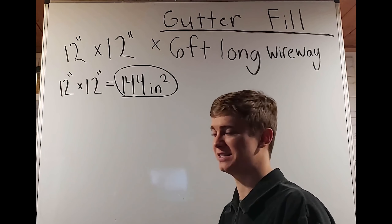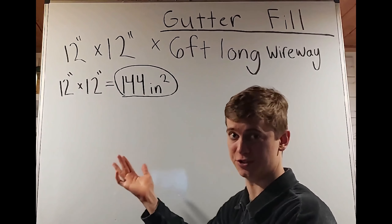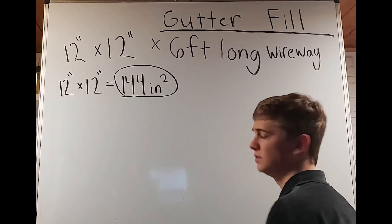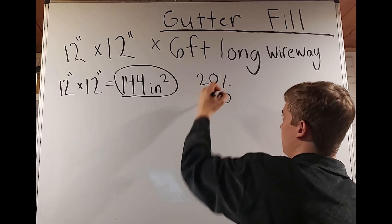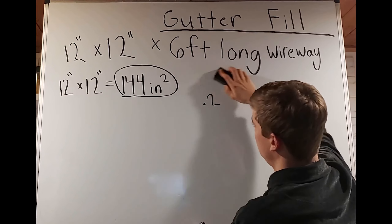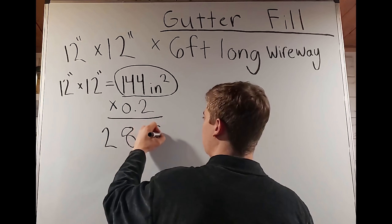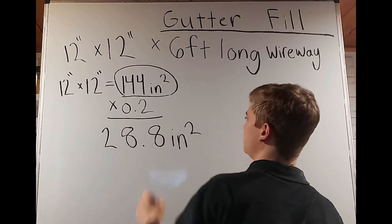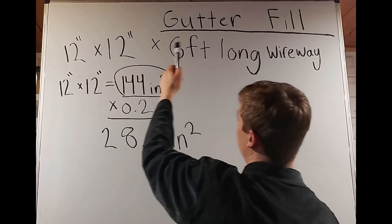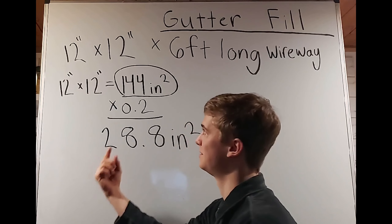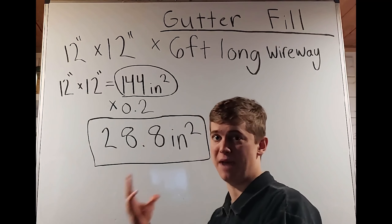We're not done yet with this 144 square inches because we can only fill it to 20%. Written as a decimal, 20% is 0.20 — or just 0.2. If we take 144 and multiply by 0.2, that gives us how much we can fill: 28.8 square inches. Remember, this is still square inches. This is the cross-sectional area that we can fill this 12-by-12-by-6-foot-long wireway. Simply: 12 inches times 12 inches equals 144, we take 20% of that, and that's the max fill for the wireway.